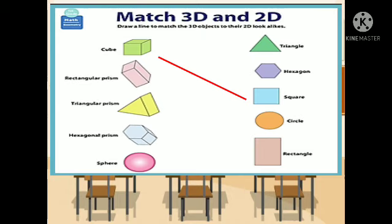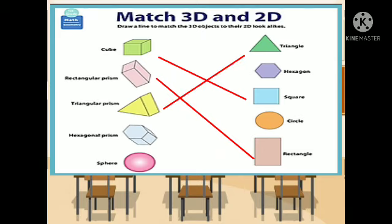How about the second 3D object? Rectangular prism. What is its 2D lookalike? Very good! It's rectangle. How about the third one? It is a triangular prism. What is its 2D lookalike? Check! It is a triangle.